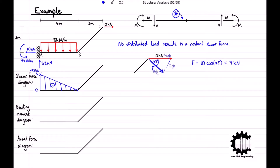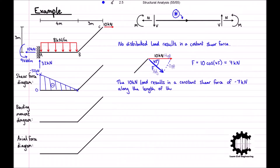This is the constant shear force being applied to bar BC. Revisiting our starred diagram, the shear force of 7 kilonewtons is being applied from the right end of the bar, so comparing to the starred diagram the shear force of 7 kilonewtons is negative. The constant shear force along bar BC is therefore negative 7 kilonewtons. Note that by convention for internal force diagrams, negative shear forces are drawn above the bar.